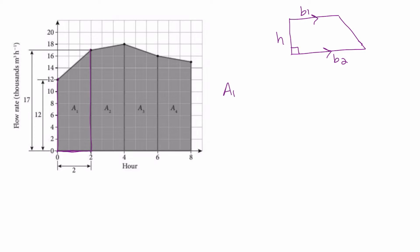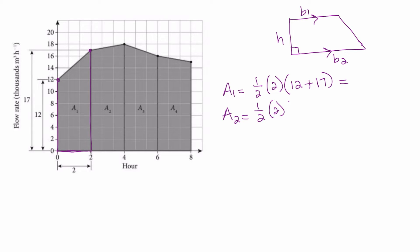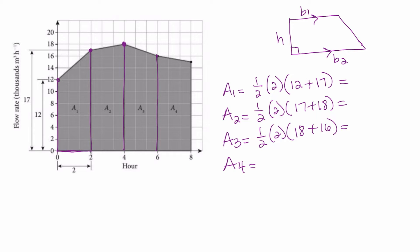For trapezoid A1, the area is one half the height times base one plus base two — base one is 12, base two is 17. For A2, it's one half times two, and the bases are 17 and 18. For A3, it's one half times two, with bases 18 and 16. For A4, it's one half times two, with bases 16 and 15. I'm going to set up all the problems first and then use the calculator to get all these values.